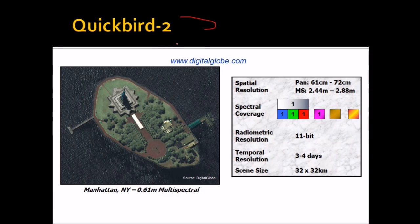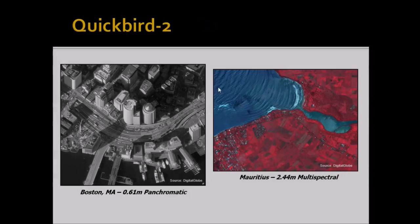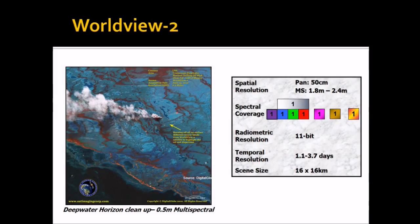QuickBird 2, like its predecessor QuickBird 1, gives 0.61-meter resolution, with multispectral at 2.4 to 2.8 metres — very good resolution. Radiometric resolution is 11-bit, meaning 2 to the power of 11 ranges of shades. The scene size is 16 by 16 kilometres.